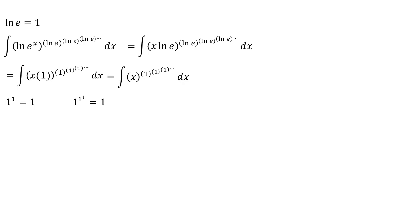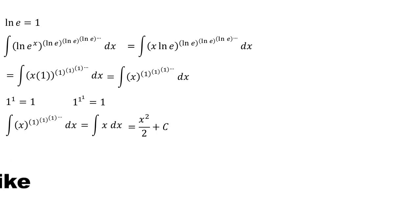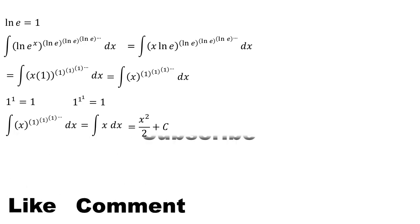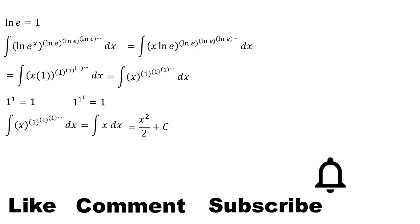Because 1 to the power of 1 is equal to 1, the entire nested expression collapses to 1. So the integral of x to the power of 1 dx is simply the integral of x dx, which gives us x squared over 2 plus C. Finally we find the answer. Don't forget to like, comment, subscribe, and turn on the notification bell. Thank you, see you next time!